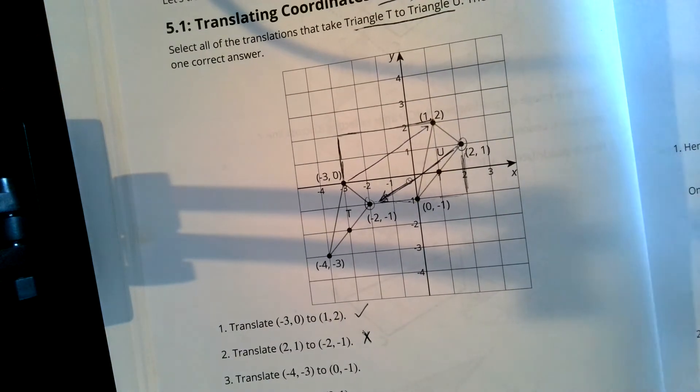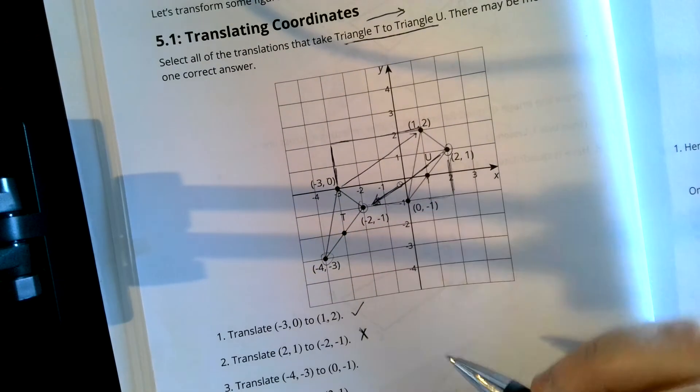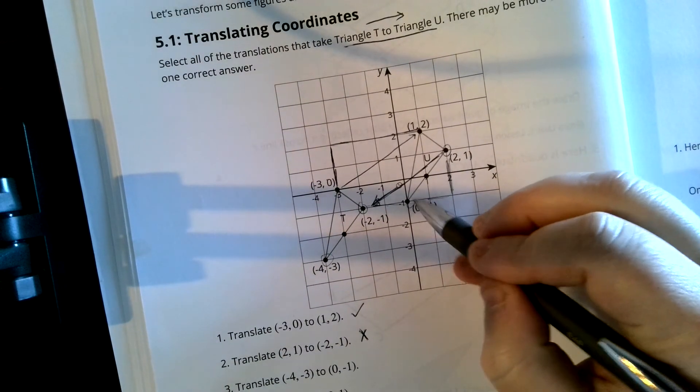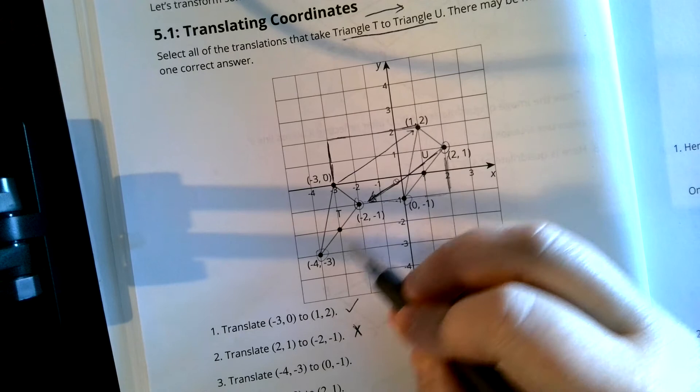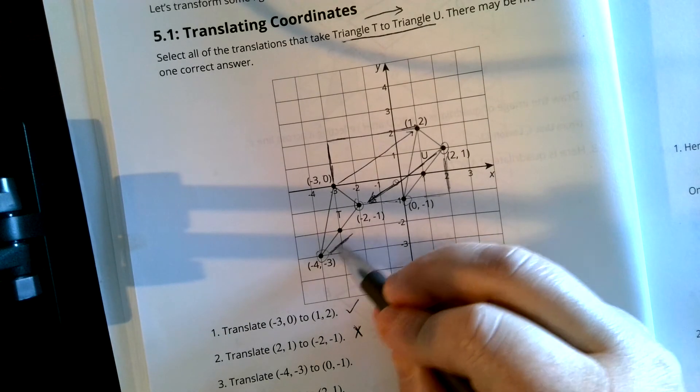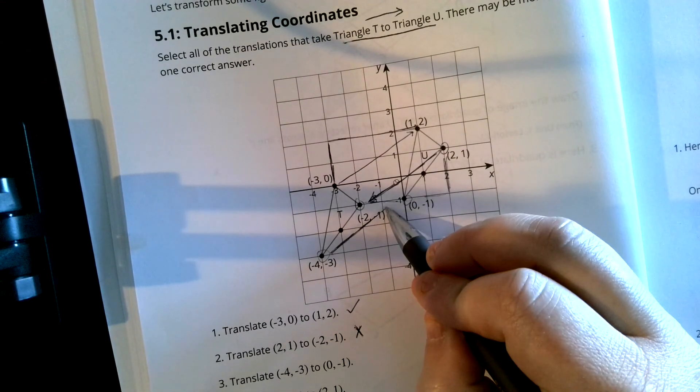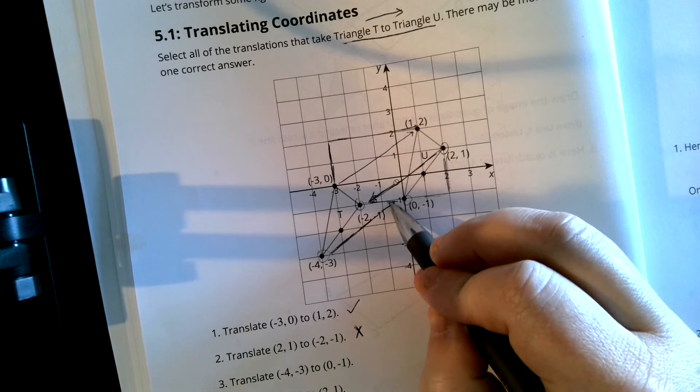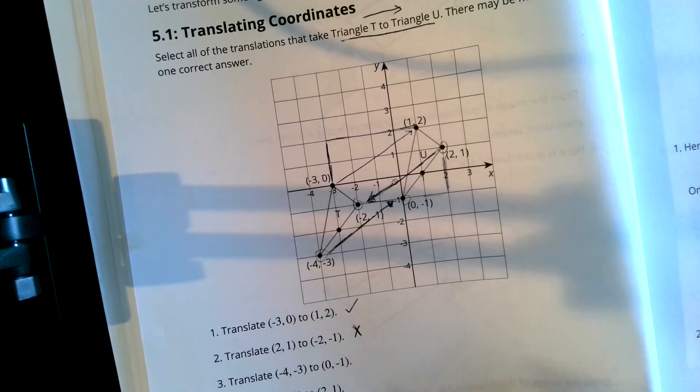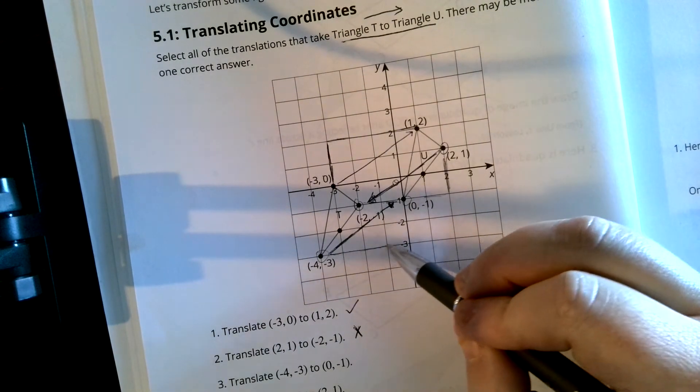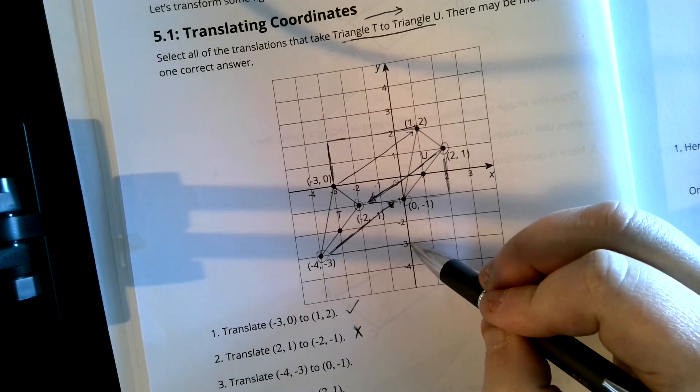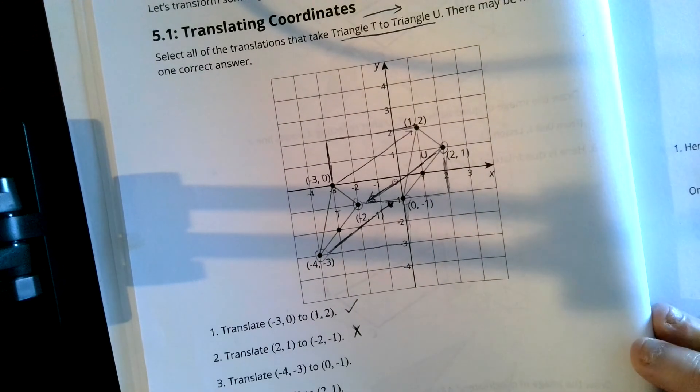The next one is (-4, -3) to (0, -1). And this, of course, can be translated from T to U. It's the correct direction. And again, this is moving 1, 2, 3, 4 to the right and up 2. So that one is correct.